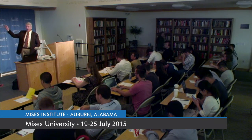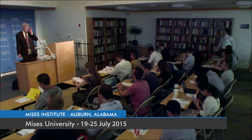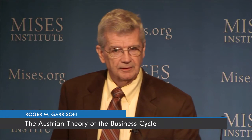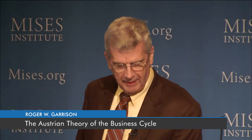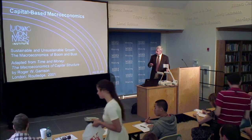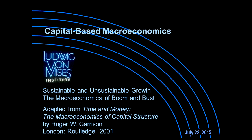The title of this lecture is Austrian Theory of the Business Cycle, but as you'll see, it's actually part of a much broader aspect of Austrian economics — something I call capital-based macroeconomics. The business cycle theory is just something of a corollary to the more general capital-based macroeconomics. We're going to sketch out the whole business of sustainable and unsustainable growth. It depends on what the central bank is doing with interest rates. If interest rates are market-determined, we get sustainable growth; if they're manipulated by the central bank, you get the Austrian business cycle.